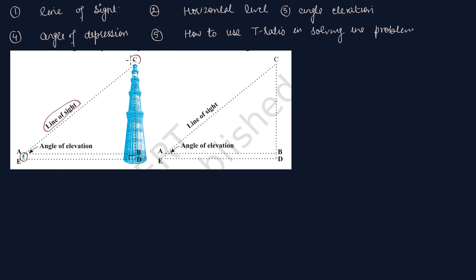इस बच्चे की height है और वो वहाँ से एक मिनार की ओर देखता है। इस मिनार की जो height है वो CD है। और यहाँ वो अपनी नजरें गड़ा देता है। जब वो मिनार की ओर देखता है तो हम उसकी eyes से मिनार के top point की ओर एक line खींच देते हैं।